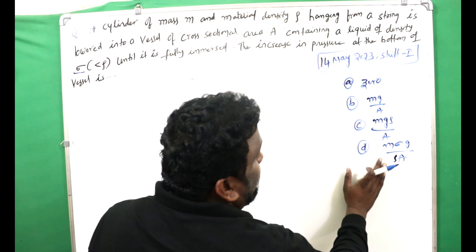We have a vessel containing liquid of density σ. A cylinder of mass m and density ρ is lowered into the vessel of cross-sectional area A. We need to find the change in pressure at the bottom due to full immersion.